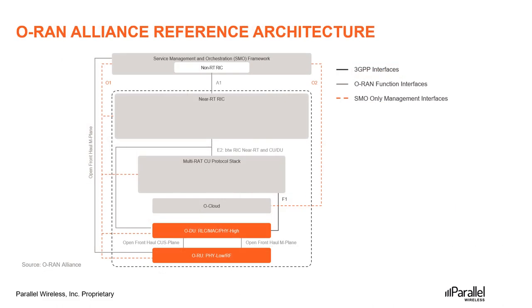Coming back to the ORAN Alliance reference architecture, this is how it looks without any details. Going from top to bottom, we have SMO with the non-RT RIC, the near-RT RIC, the multi-RAT CU protocol stack, then O-Cloud, followed by ODU and ORU. The ODU has RLC, MAC, and PHY HIGH, while the ORU has the low PHY and RF. This is based on split 7.2.